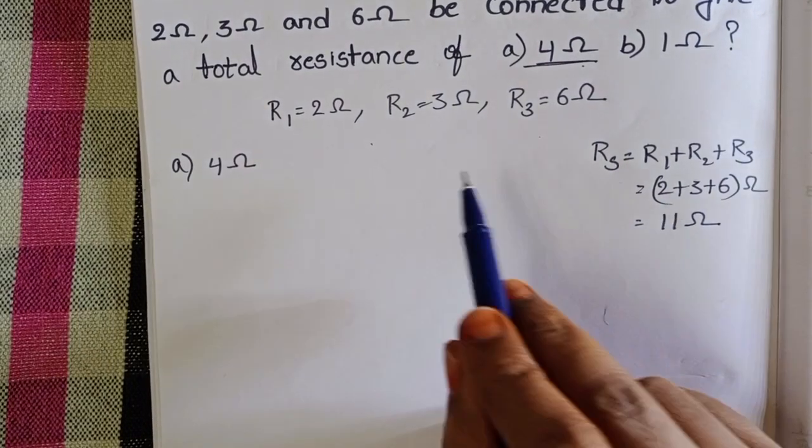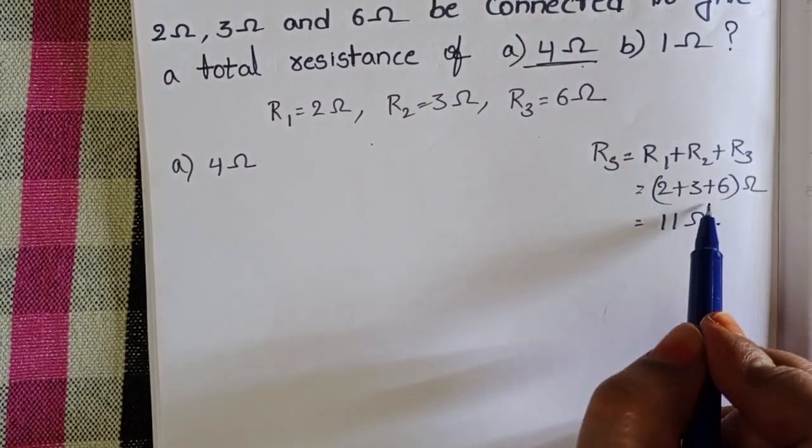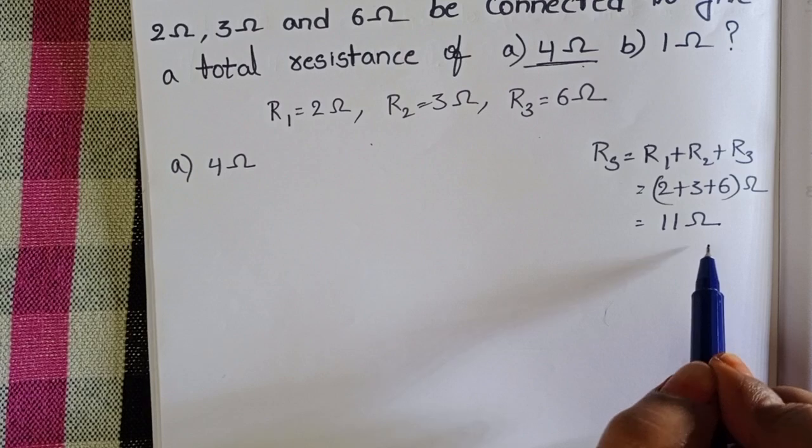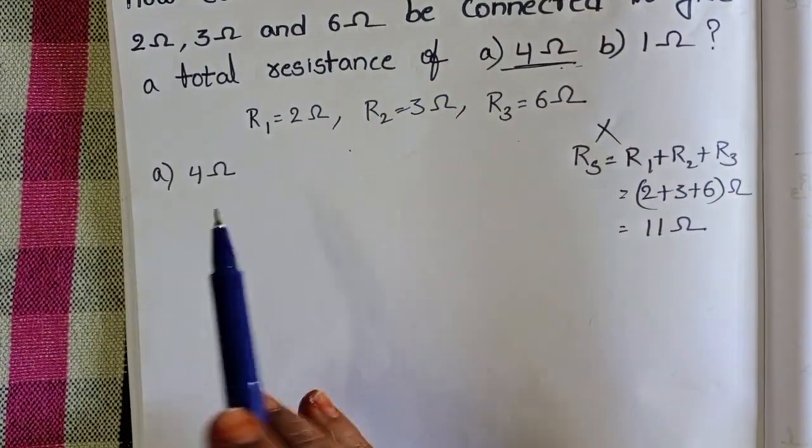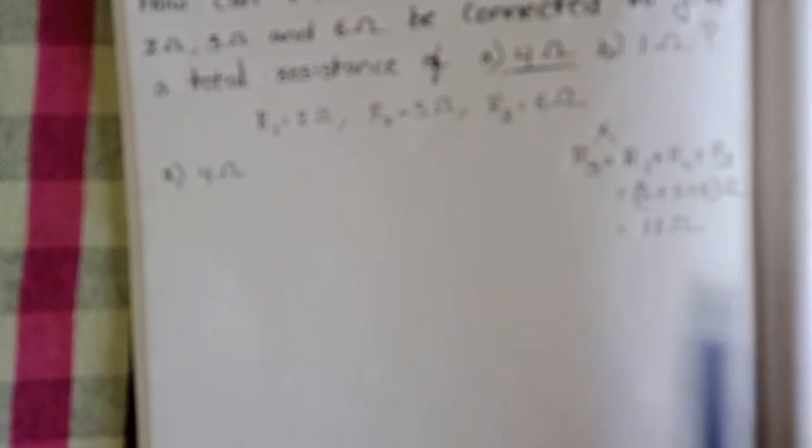So, when we connect the given three resistors in series, total resistance is 11 ohms. But here we want 4 ohms. So, use the connection other than series. That means both series and parallel.